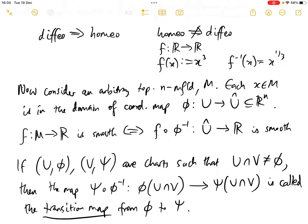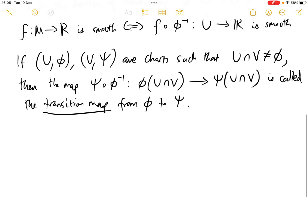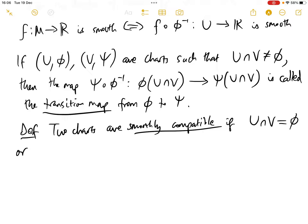So this transition map is a composition of homeomorphisms and therefore is itself a homeomorphism. We say that two charts are smoothly compatible. So two charts are smoothly compatible if either the intersection of U and V is empty, or the transition map, which is psi composed with phi inverse, is a diffeomorphism.